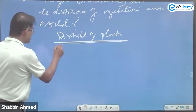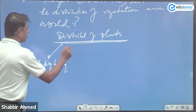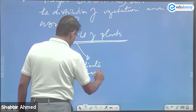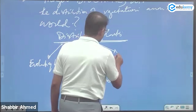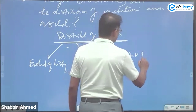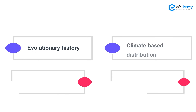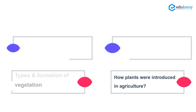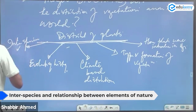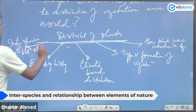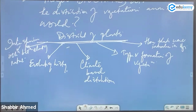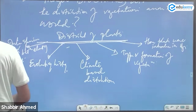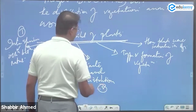You can study plant distribution in terms of evolutionary history, climate-based distribution, types and formation of vegetation, how plants were introduced in agriculture, or the distribution of plants and animals. These are five ways of studying it. The moment I say 'distribution,' it is geography.